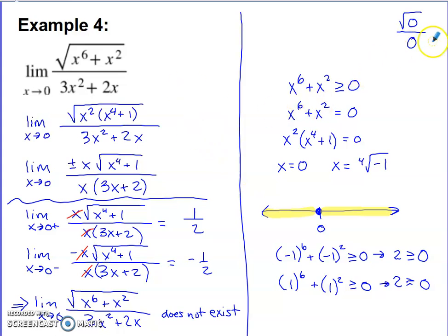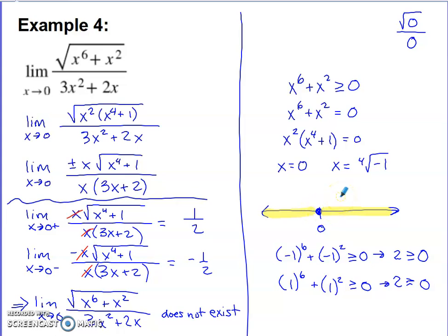The last example is a combination of both situations we've seen. Putting 0 in place of all x's gives square root of 0 over 0 — both issues simultaneously. I did some work on the right side of the screen to check the root: when is what's under the root greater than or equal to 0? In this case, both sides of the number line actually work, so it's not like the last example. We'll go more with the algebraic strategy — try to get cancellation to occur.